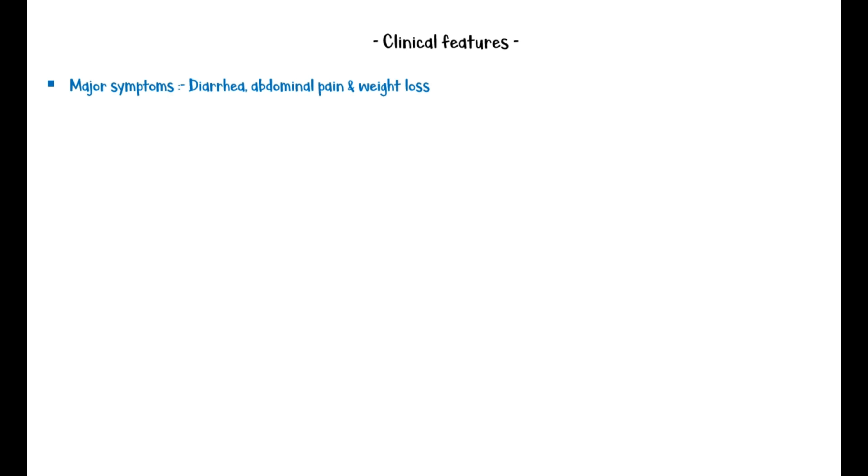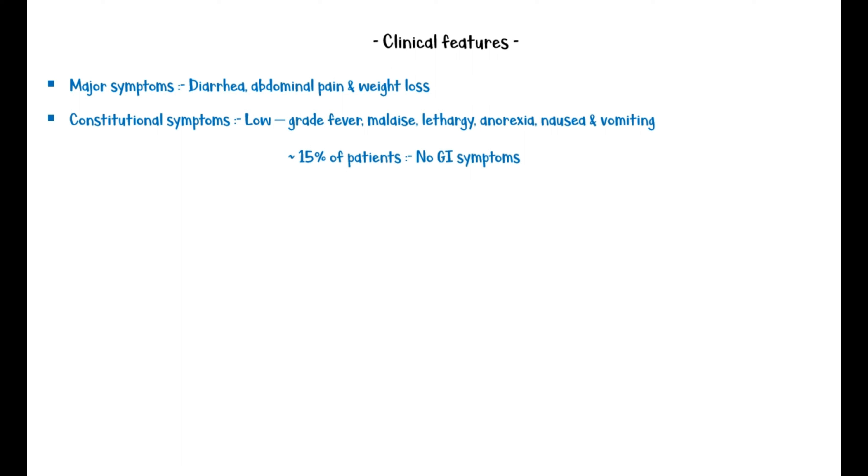Major symptoms of Crohn's disease include diarrhea, abdominal pain, and weight loss. Constitutional symptoms like low-grade fever, malaise, lethargy, anorexia, nausea, and vomiting may also be present. In about 15% of patients with constitutional symptoms, there are no gastrointestinal symptoms. Reduced growth velocity and delayed puberty may be the main presenting complaints in children.